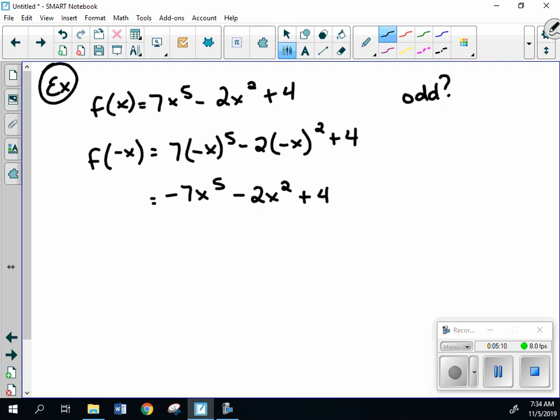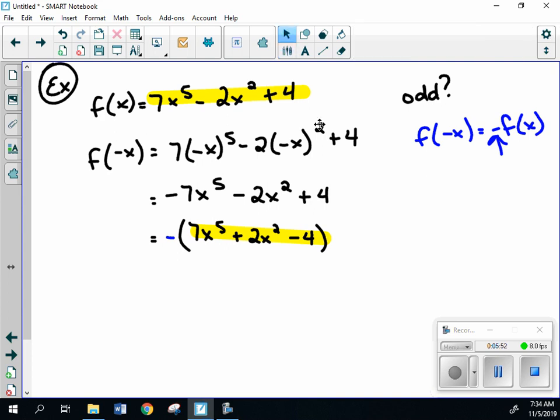If I'm looking at this, if I were to pull out, because if it's an odd function, it's supposed to give us this. Notice that negative is on the outside. So we're going to pull out that negative and see if I pull out that negative, did I get the original? So that would give me 7x to the 5th plus 2x squared minus 4. I can see that this function here is not the same as that function there. So since those are not the same function, this is actually not an odd function. This results in a neither.